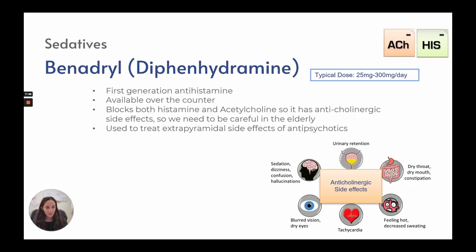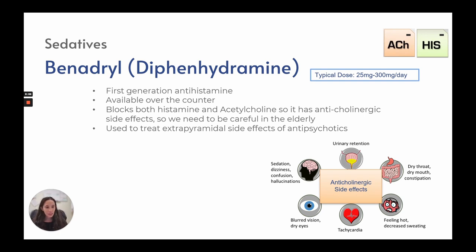Sedatives: Benadryl is a first-generation antihistamine available over the counter, with a typical dose of 25 to 300 milligrams a day. It blocks both histamine and acetylcholine, producing anticholinergic side effects — blurred vision, tachycardia, feeling hot, decreased sweating, dry throat, dry mouth, constipation, urine retention, sedation, dizziness, confusion, and hallucinations. Use carefully in the elderly. It is also used to treat extrapyramidal side effects of antipsychotics.